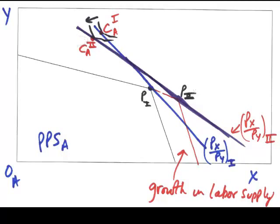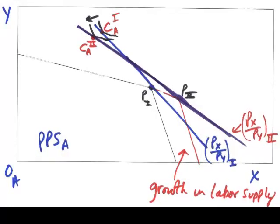This is called immiserizing growth, growth that makes you worse off. In a rational world, nobody would do this, suggesting that when immiserizing growth takes place, it is outside of the ability of residents, citizens, and scientists to stop it from happening.